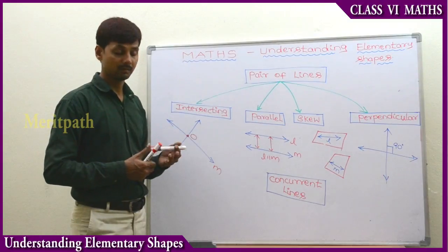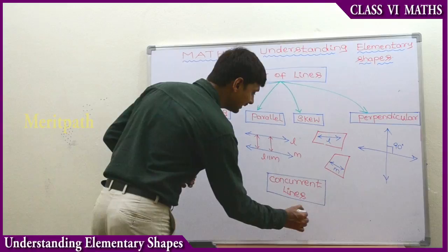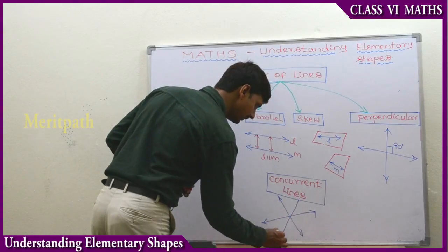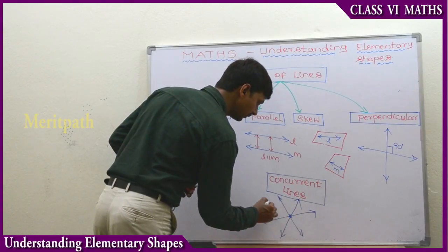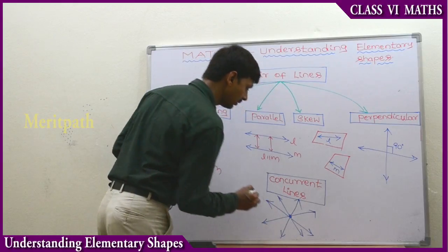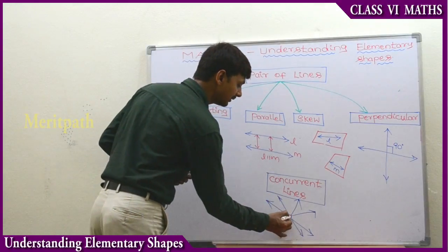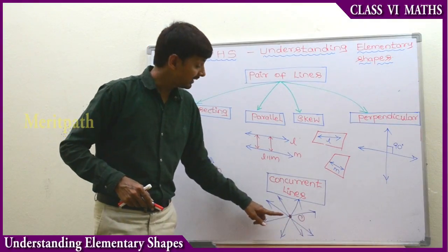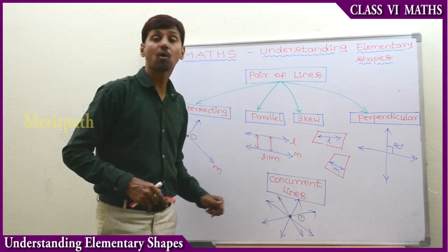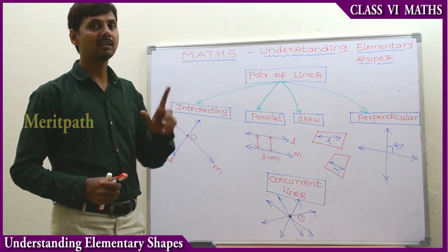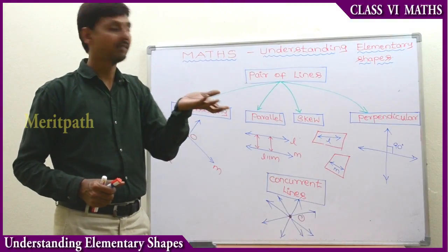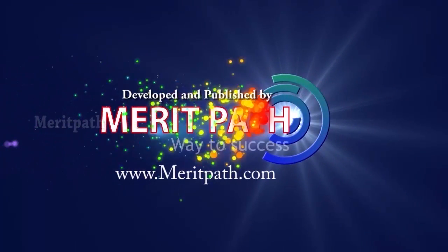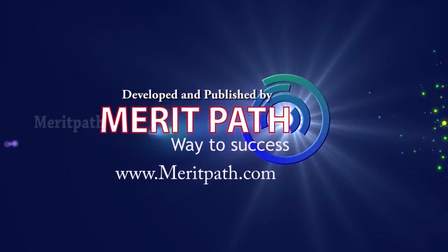Let's go to the next concept: concurrent lines. Two or more lines meeting at one common point are called concurrent lines. We need at least two lines — or more than two lines — all passing through a single point to call them concurrent lines.